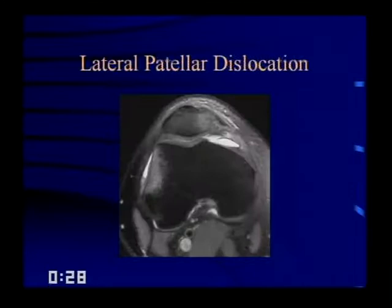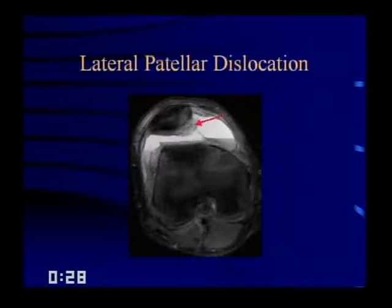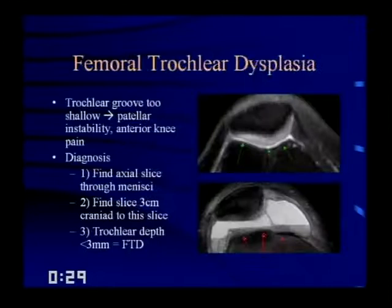The patella jumped out of the trochlear notch, impacted against the lateral femur, and popped right back when the patient stood up — leaving classic bone bruises and tearing of the medial retinaculum. Look for osteochondral injuries. Here's a nice example: this person has a hemarthrosis with a hematocrit level. Relatively normal cartilage on the lateral facet of the patella, but the medial facet cartilage is all disrupted. This patient also had an osteochondral fracture.